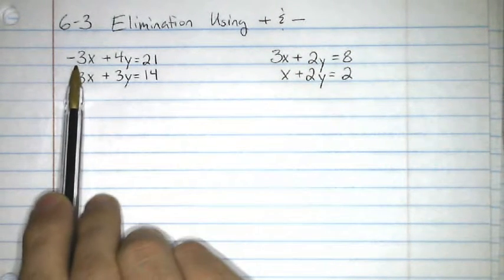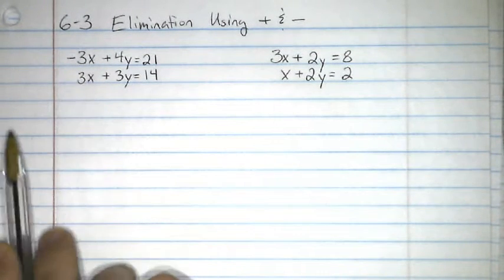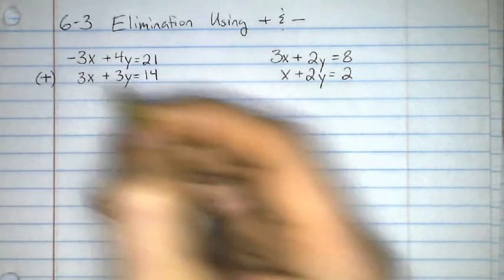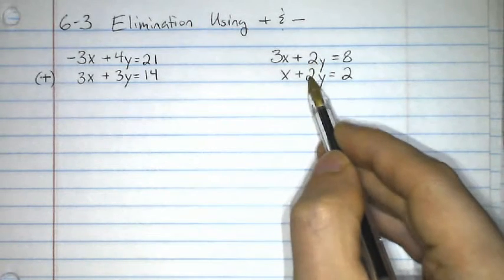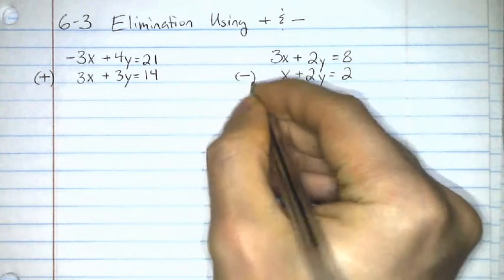Now, when you have opposites, a negative 3 and a positive 3, what we're going to use for elimination is addition. When we have exactly the same, same sign and everything, we're going to use subtraction.